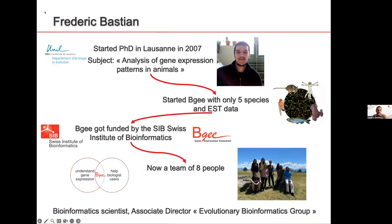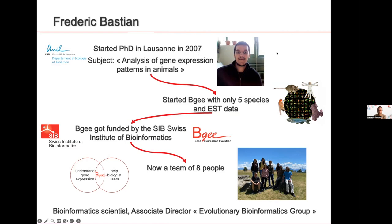Now we are a team of eight people working on developing this database, allowing biologists to get clear information about gene expression and where genes are expressed, to make comparisons between species. We now have 52 species in BG. After a few years at the SIB, I'm now associate director in the evolutionary bioinformatics group of Marc, and I lead the development of the BG database.